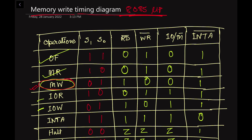In the case of memory write operations, the status signals S1 and S0 have values of 0 and 1 respectively. These are previously defined signals used for the selection of various operations — the status signal represents what operation the microprocessor is performing. We also have the RD bar signal, whose value is 1 here.